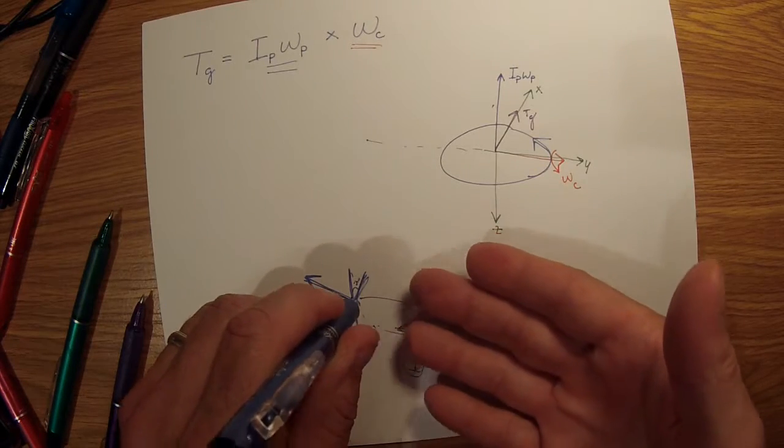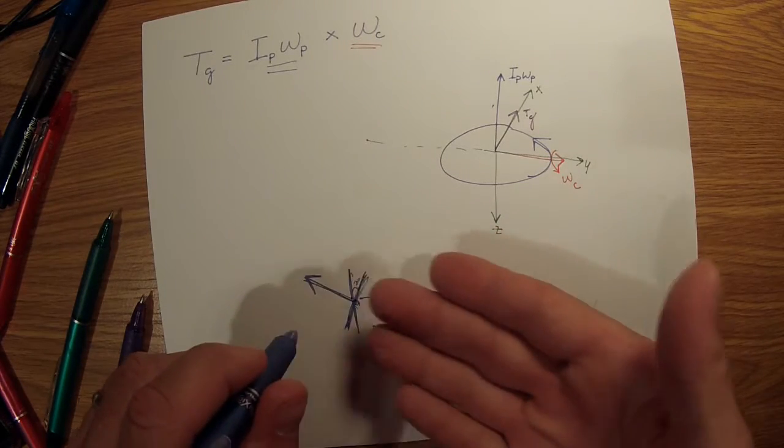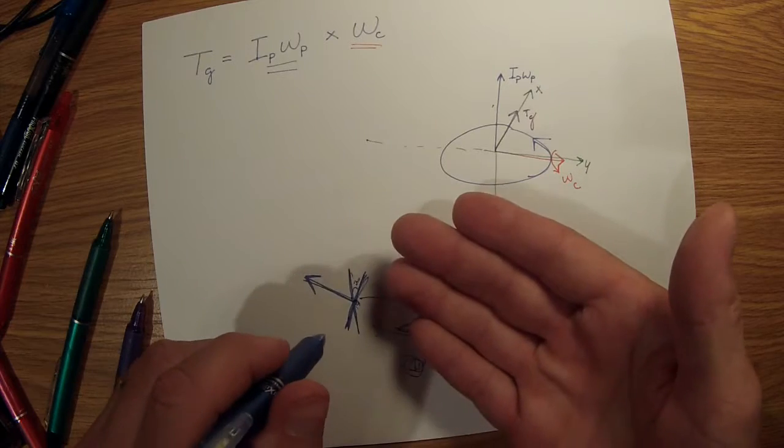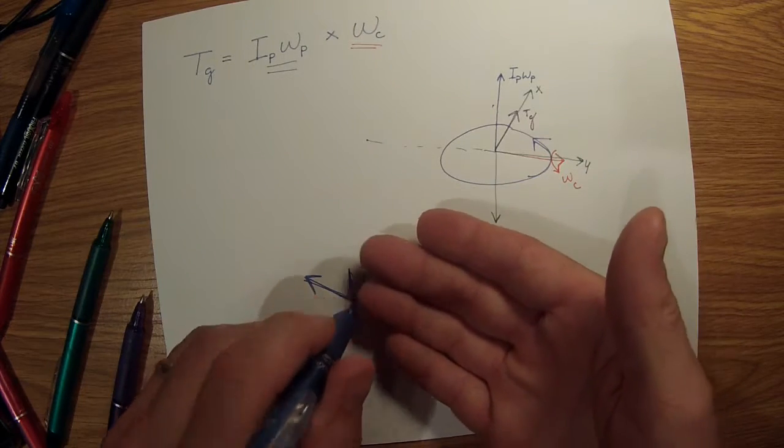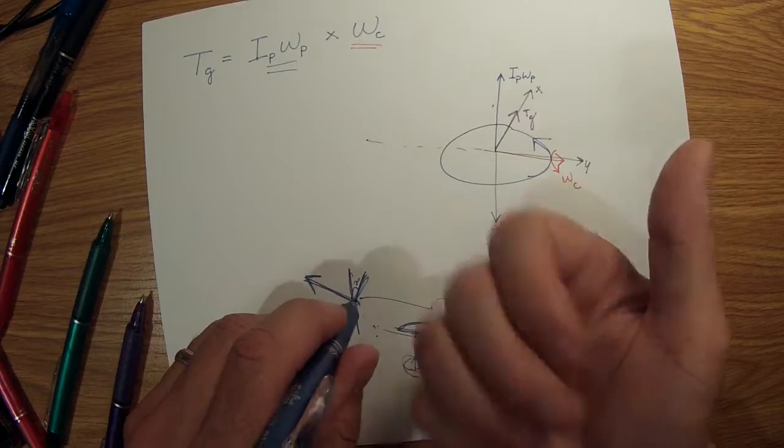Let's just do it this way: let's cross the angular momentum vector of the propeller to this vector, and we're going to have a torque Tg.